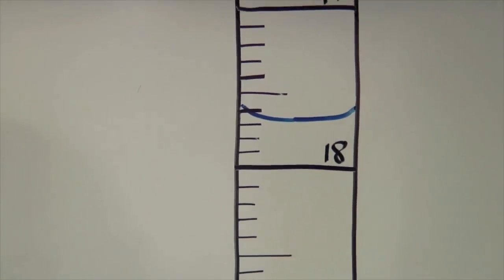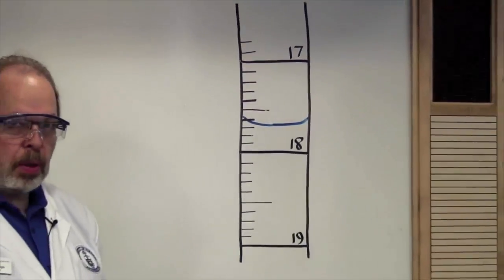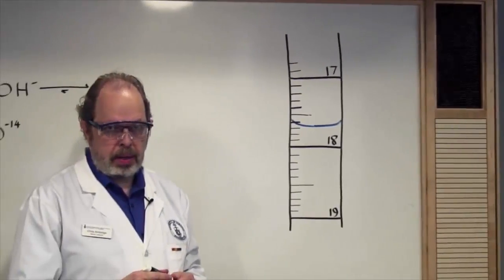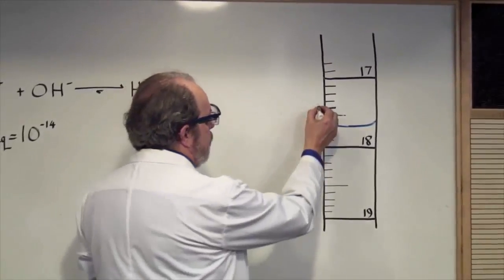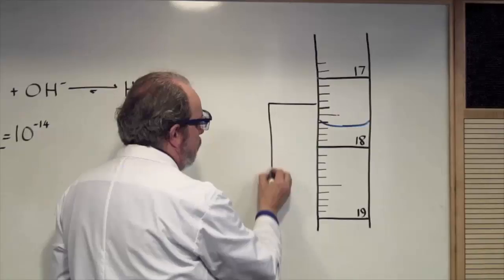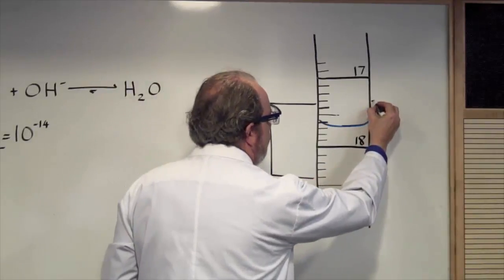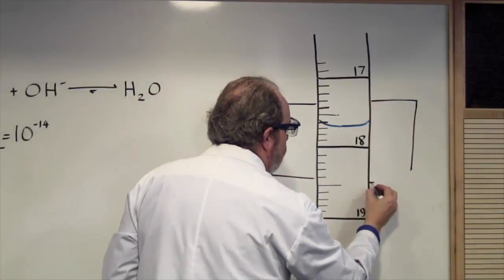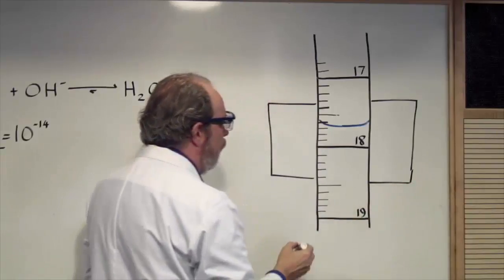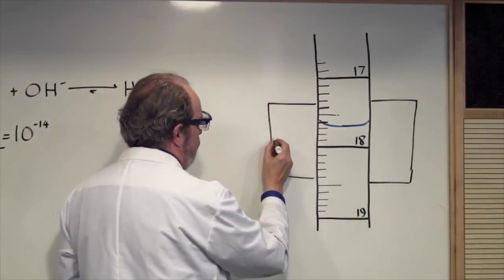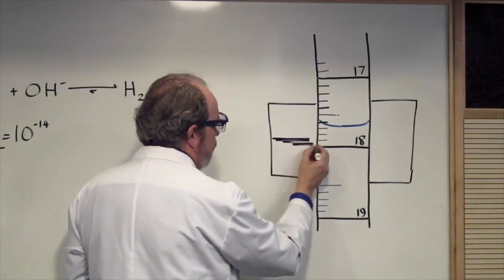Now, you can make the meniscus much more visible by using a burette reader card. It's a light-colored piece of cardboard, and you place it like this behind the burette or whatever you are trying to read. It will have a heavy, dark line.